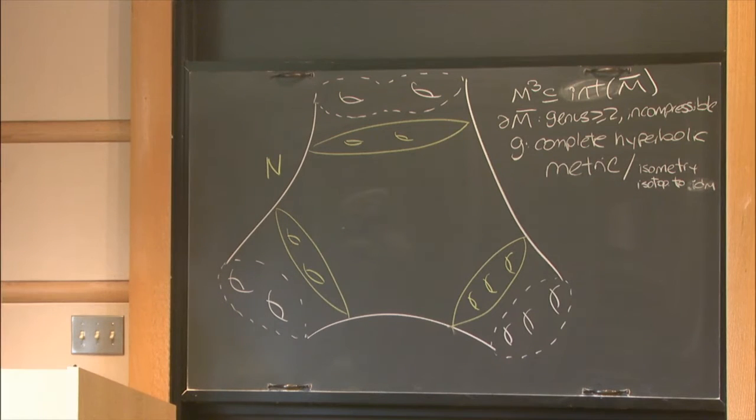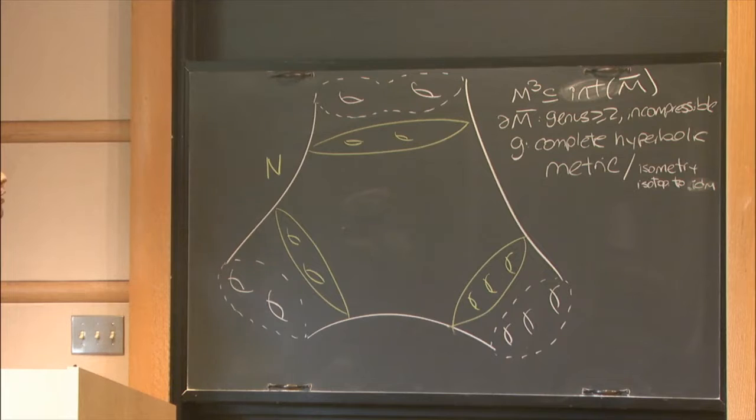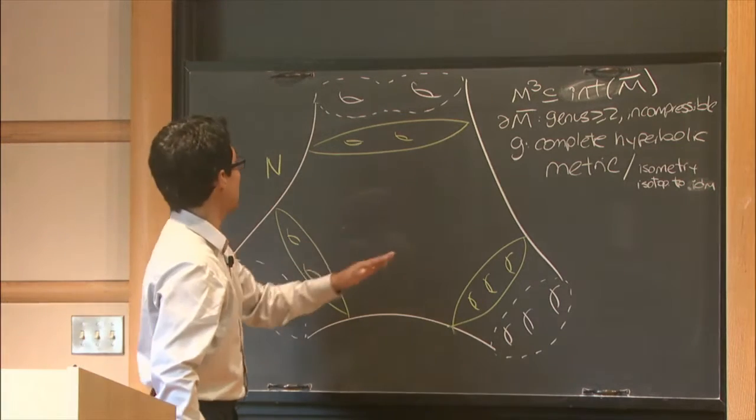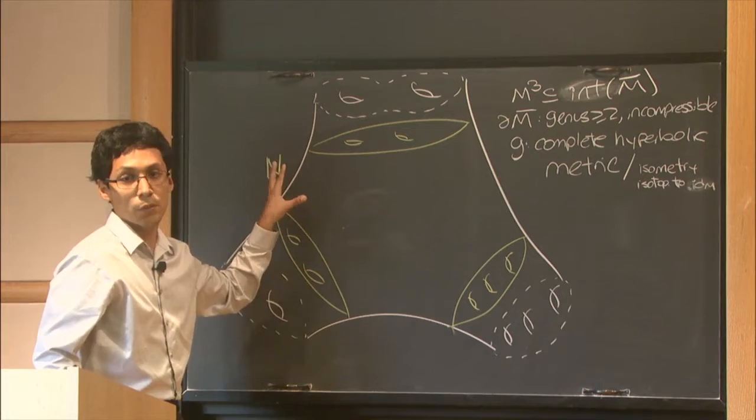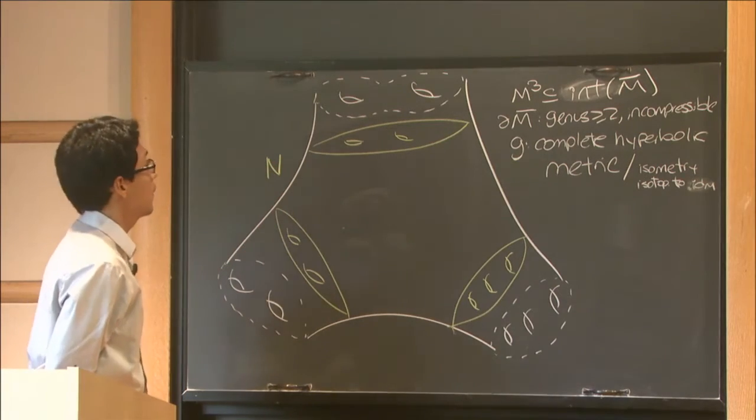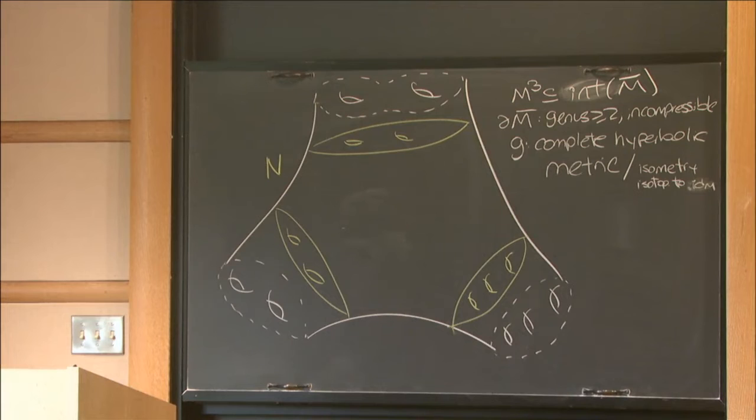This might seem to be a little bit too arbitrary, but once you consider these conditions, almost every metric looks like this one. These are just an open dense set in the type of metric we will be interested in.